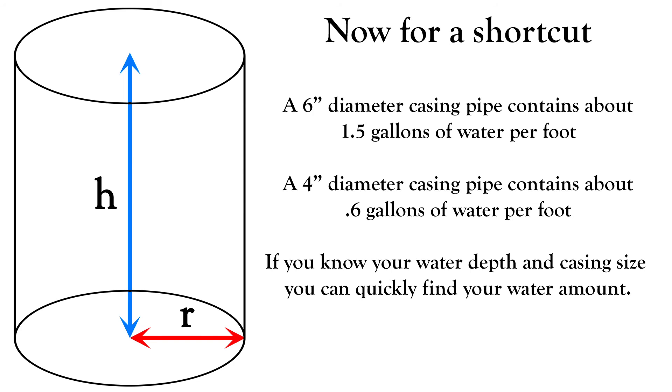Okay, so now here's a shortcut since we got all the complicated formula out of the way. Six inch wells have about 1.5 gallons of water per foot. And four inch wells have about 0.6 gallons of water per foot.